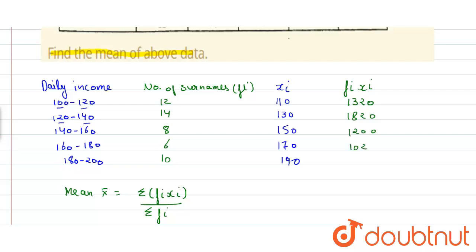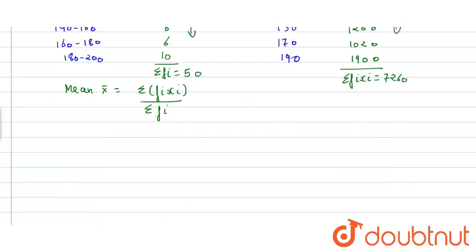The sigma fi xi is equal to sum of all these we have 7,260 and sigma fi is equal to sum of all these terms which is equal to 50. So by putting values we get mean is equal to 7,260 upon 50 which is equal to 145.2 which is our answer.